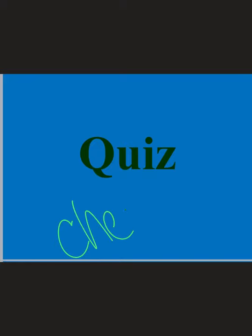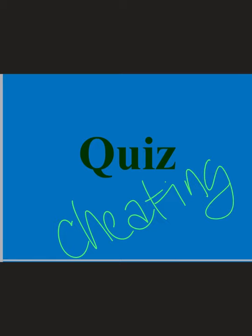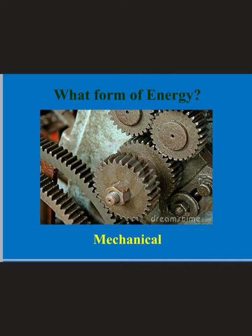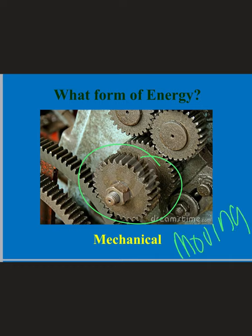We're going to do a small quiz — it's a special kind of quiz because you'll get the answers along with the questions. It's less like a quiz and more like cheating, but it's all to help you understand the concept. What form of energy do we see here? It's mechanical, because we have moving parts. The gears are spinning, so that's moving parts — mechanical energy.